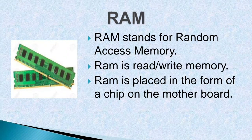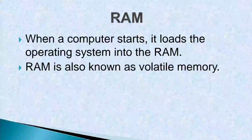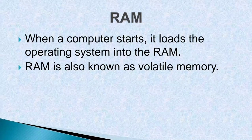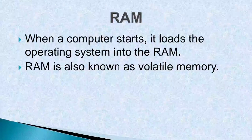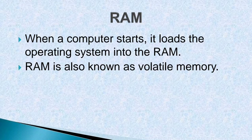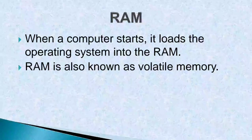First is RAM. RAM stands for Random Access Memory. RAM is Read-Write Memory, meaning information can be written to and read from RAM. RAM is placed in the form of a chip on the motherboard. When a computer starts, it loads the operating system into the RAM. While you are working on any program, you are actually working on the program loaded in the RAM. It can store information as long as the power is switched on. When the power supply is switched off, the information in the RAM is lost.